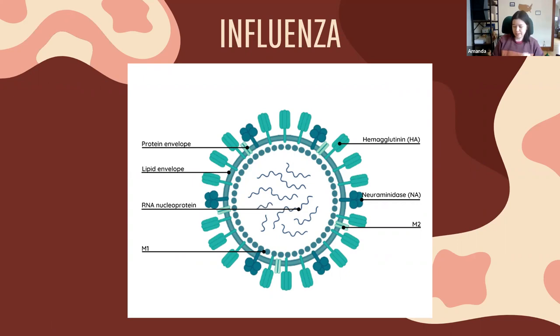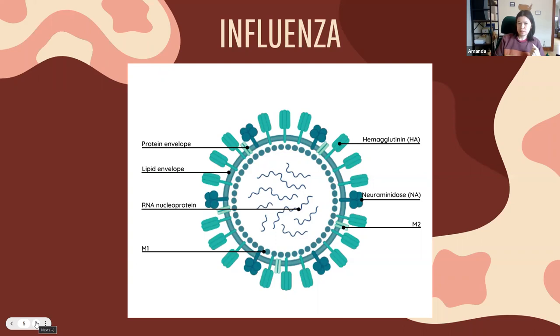Influenza itself is a spherical virus, known as an orthomyxovirus. It is a negative-sense segmented RNA virus, meaning it has single-stranded RNA broken up into segments — not one long entity. It's composed of seven to eight different segments, read backwards when it replicates.